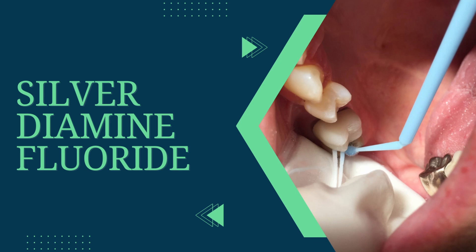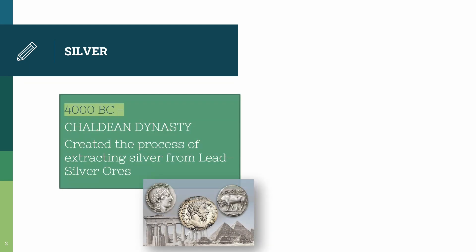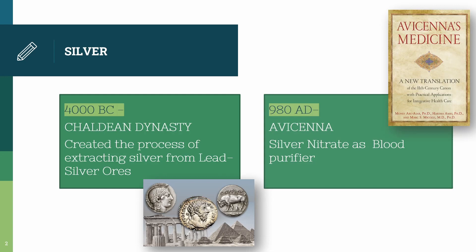Let's start off with one of the key ingredients of SDF, and that is silver. The discovery of silver takes us back to 4000 BC, where the Charlene dynasty were the ones who created the process of extracting silver from lead silver ores. Later, in the year 1980 AD, Avicenna in his book Avicenna's Medicine talks about silver being used as a blood purifier.